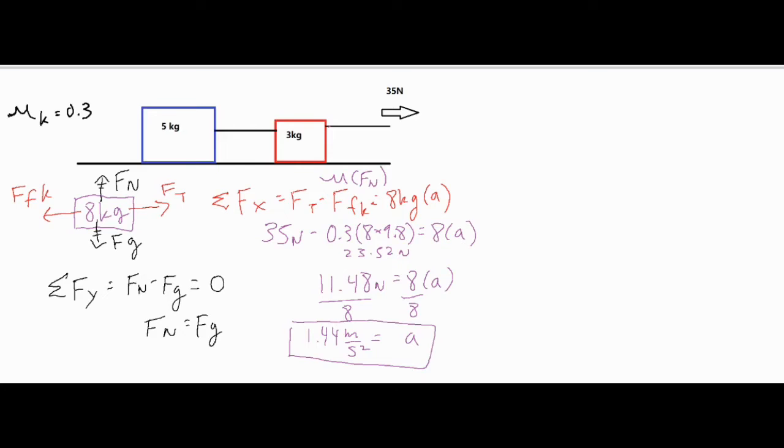That's the acceleration of the entire system. So if you were asked for the acceleration for the five kilogram or three kilogram block, both of them would have an acceleration of 1.44 meters per second squared.